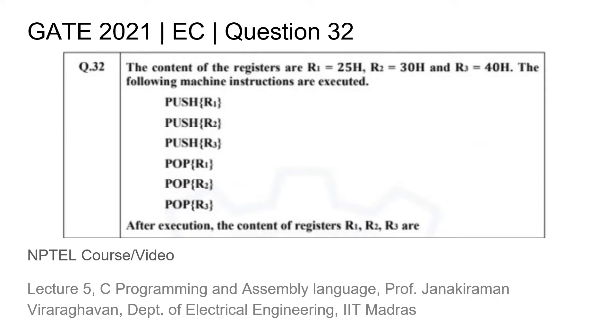This is question 32 from the GATE 2021 EC paper where we are given the following push and pop operations for registers r1, r2, and r3 with the initial data for r1 being 25 hex, r2 being 30 hex, and r3 being 40 hex. After the execution, we are asked to find out what the contents of the registers are.